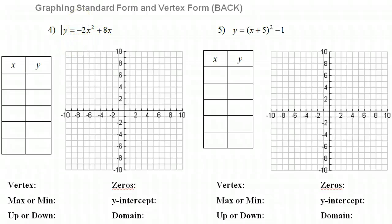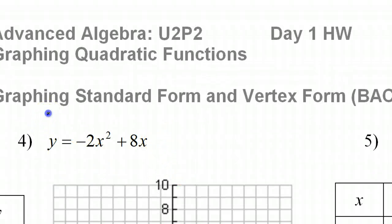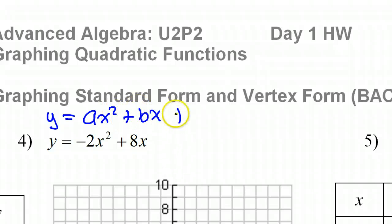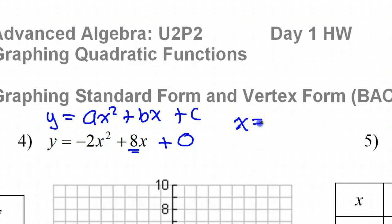Problem number four is back in standard form. We seem to have a term missing here — normally we're talking about ax² + bx + c, so you'll notice the c term is missing, so it's really like plus zero. This 8 is the b term — you can tell because it's next to the x. For standard form, we start by finding the axis of symmetry, which is given by the formula x equals the opposite of b divided by 2a.